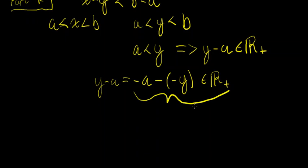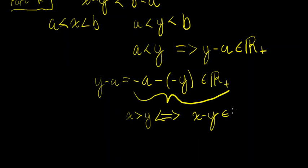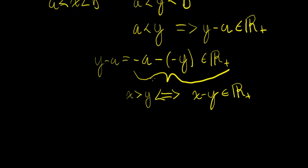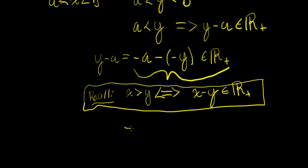So if we know this is true, by the property that if something minus something else is in the positive real numbers, this is actually an if and only if statement — that means negative A is strictly greater than negative Y. We also have that X is strictly less than B. Using the same addition property as before, negative A plus B is strictly greater than X plus negative Y.